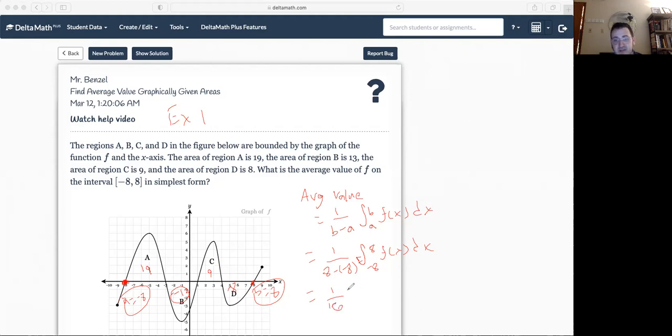Just kind of add them up. The fraction becomes 1 over 16, and then we're just going to add. So I've got 19 minus 13 plus 9, and then I have a minus 8. So I'm taking account both positive and negative areas. And I'm going to see what kind of wins out here.